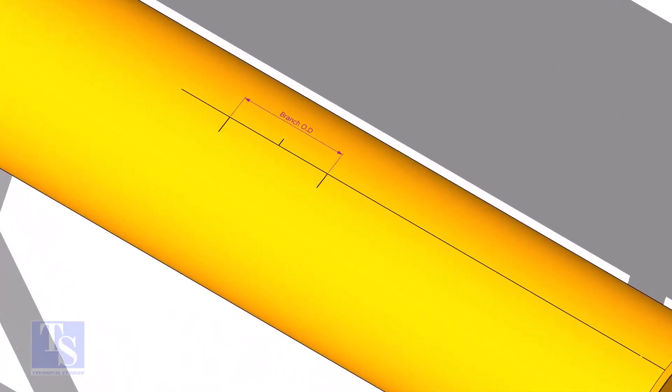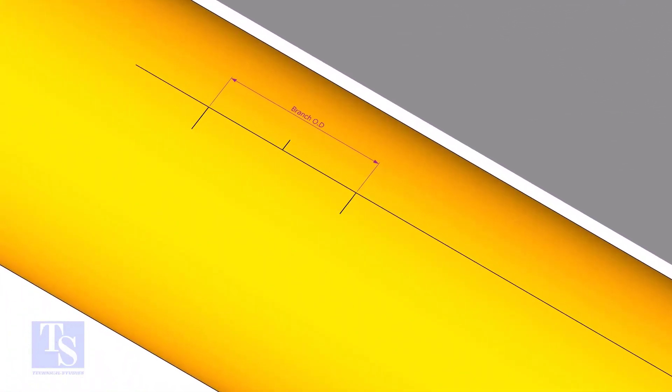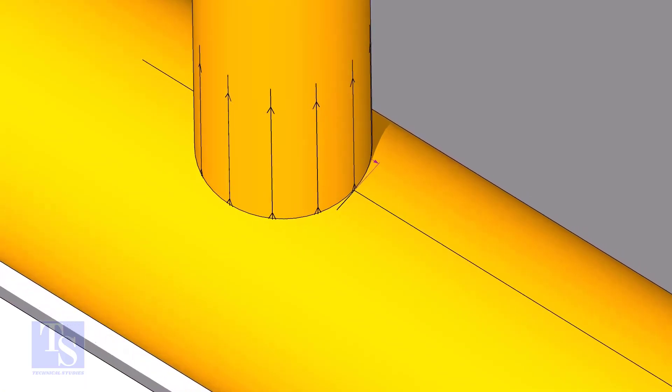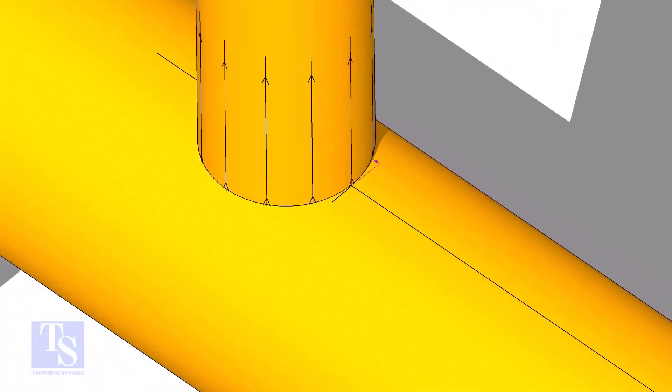Mark the branch OD on the center line of the header. Put the branch exactly on this marking, matching the branch center line.